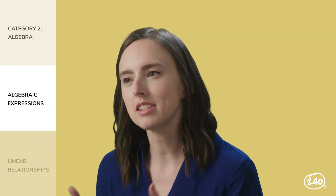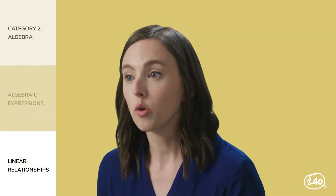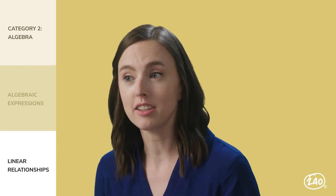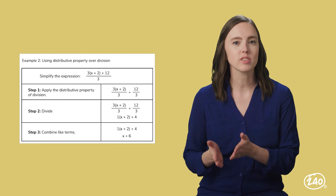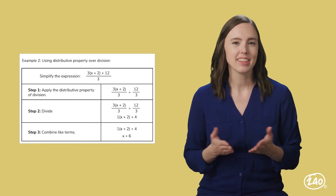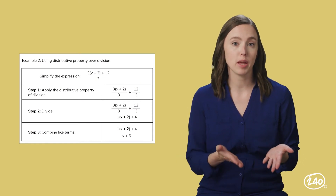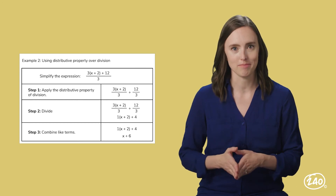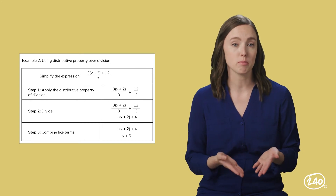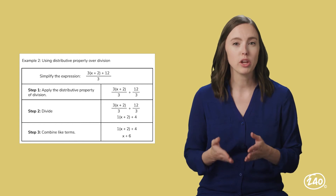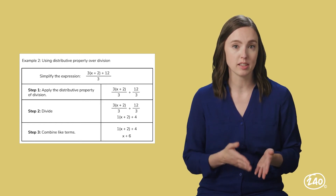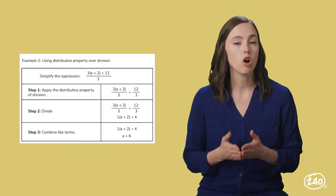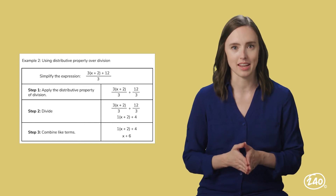Let's look a little closer at what we need to know, starting with algebraic expressions. You might be given an expression and need to choose an equivalent expression — a fancy way of saying you need to find an expression equal to the one you are given. In this case, we're able to simplify the given expression: we go from 3 times the quantity of X plus 2, plus 12, all divided by 3, and simplify it down to X plus 6.